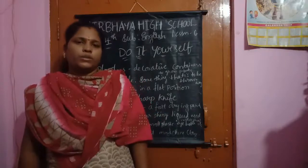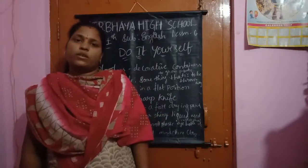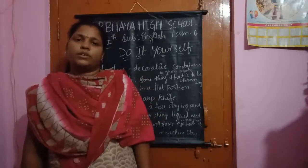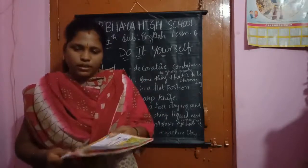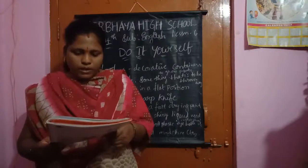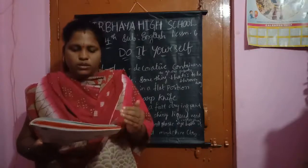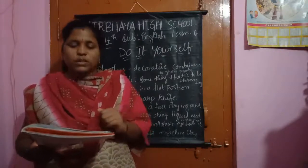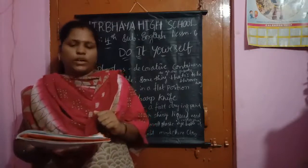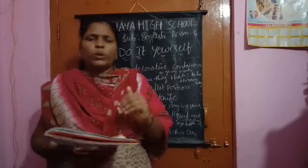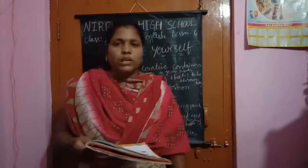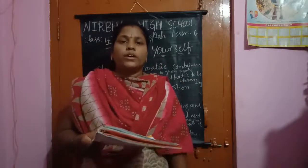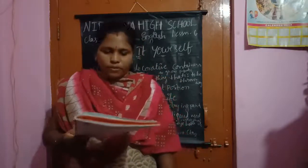Now we are going to the 6th lesson of your textbook. Open your textbooks, children, everyone. What is the page number? 32. What is it here? 'Do It Yourself.' What is it, children? 'Do It Yourself. Self.'